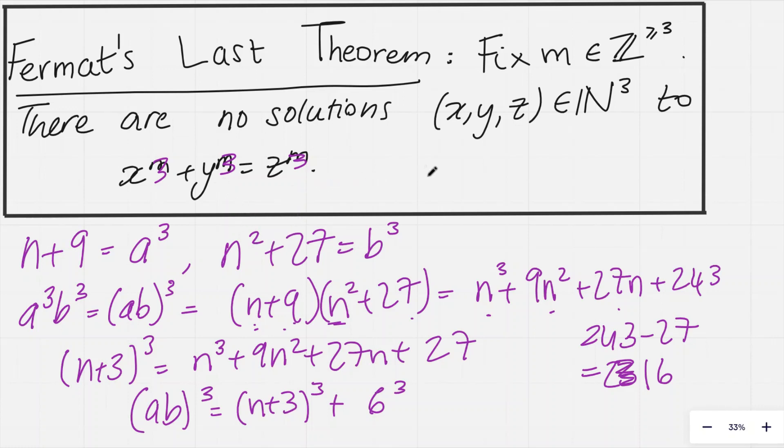But that doesn't mean that we can't have 0. If x equals 0, and we have y to the m equals z to the m, there's definitely a solution to that, right? Just having y being equal to z.